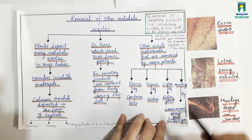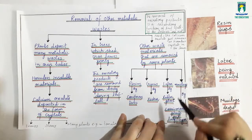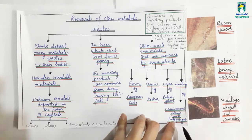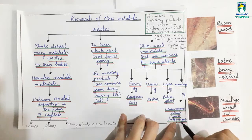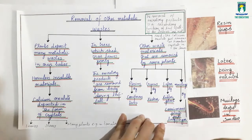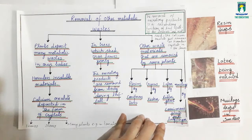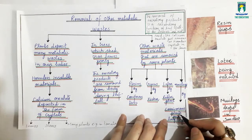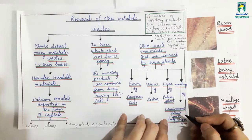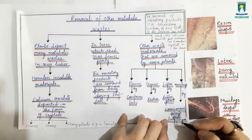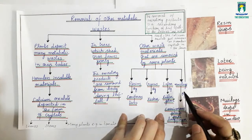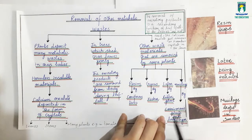Then there is mucilage, which is also a sticky material. You can observe it in lady fingers — when you cut the upper part, there is a sticky material inside, which is called mucilage. Carnivorous plants that feed on insects also have mucilage as a sticky substance.